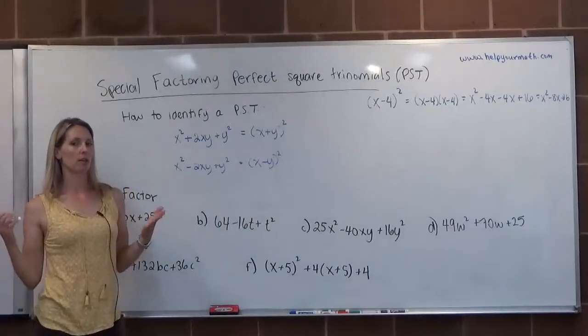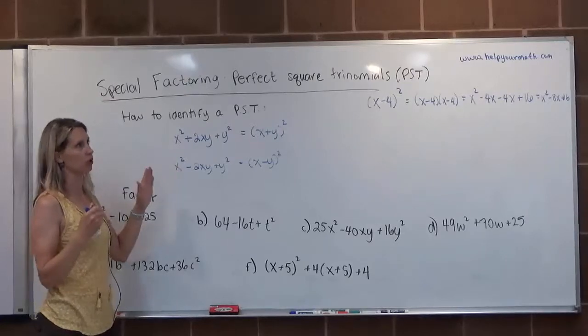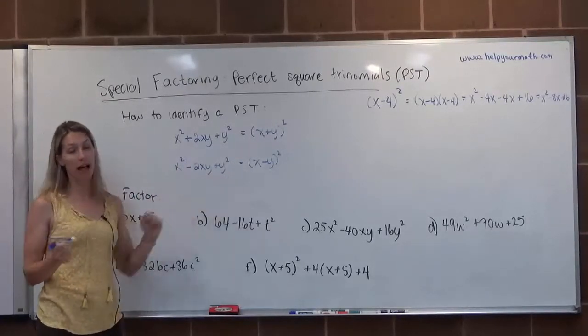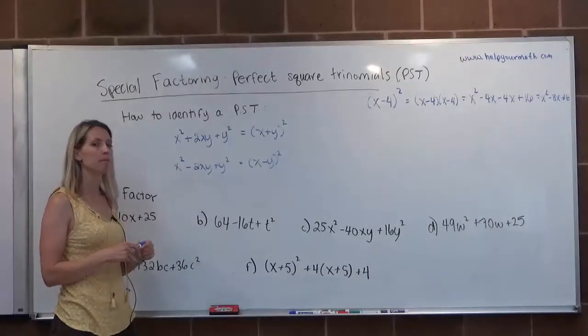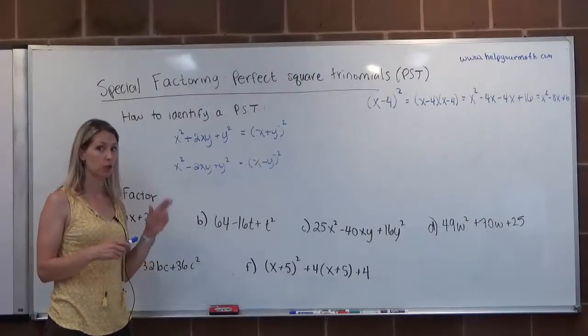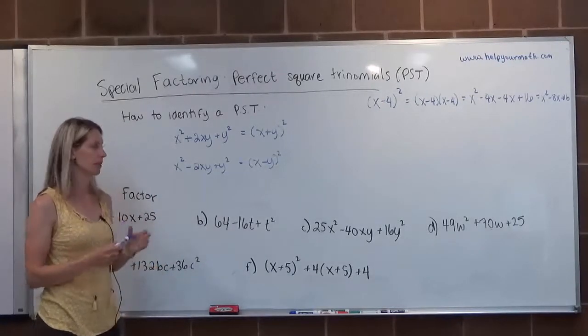So anytime you come across a factoring, if you see that the first term is a perfect square and you see that the last term is a perfect square, check to see, is the middle term the roots of the two, the first and last term, doubled? And if it is, then you have a perfect square trinomial.